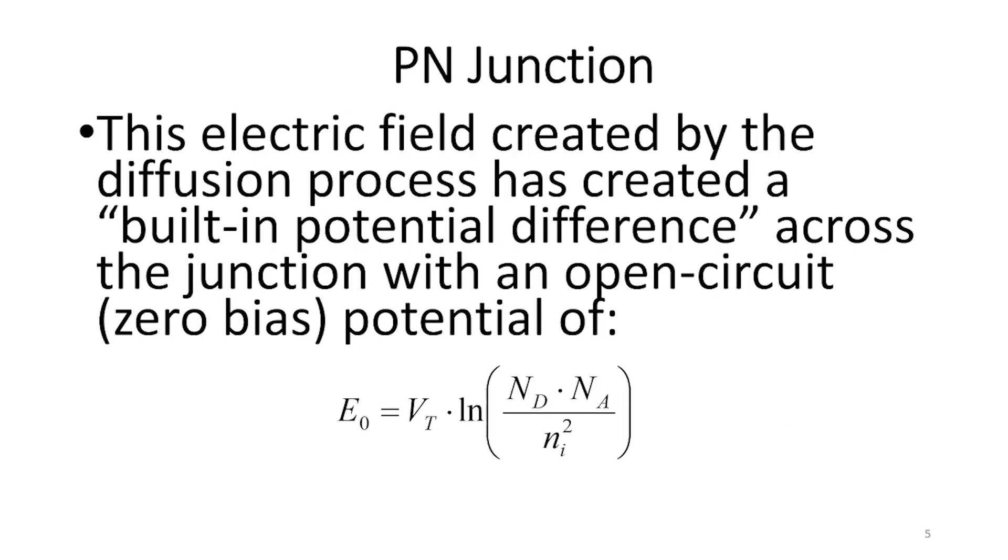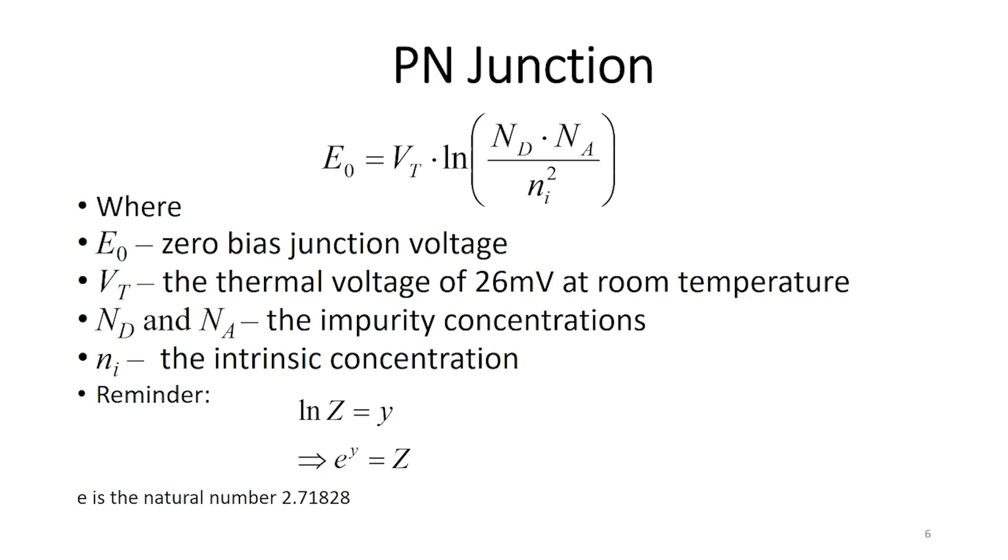This electric field created by the diffusion process has created a built-in potential difference across the junction with an open circuit, also called zero bias, potential of E0 equals Vt times ln of Nd times Na divided by Ni squared. Where E0 is the zero bias junction voltage, Vt is the thermal voltage of 26 mV at room temperature, Nd and Na are the impurity concentrations, and Ni is the intrinsic concentration.